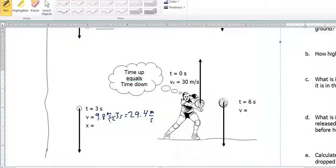But what about this volleyball being hit by this volleyball player? If she hits that ball with an initial upward velocity of 30 meters per second,